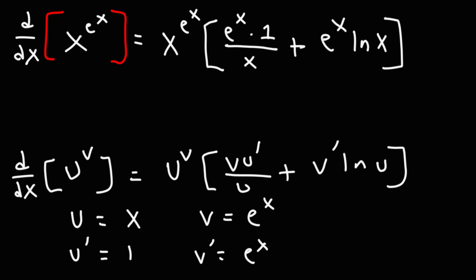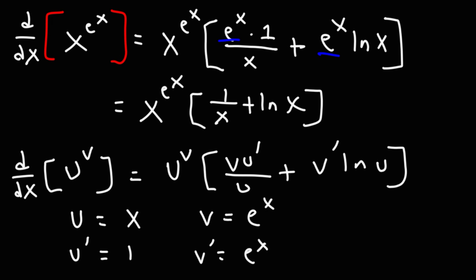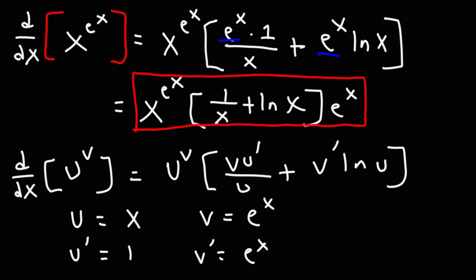So now let's see if we can simplify this. In both cases we have an e to the x, so we can factor out the GCF. So it's x to the e to the x — if we take out e to the x, we're left with 1 over x plus ln x. So the answer is x raised to the e to the x, times e to the x, times the quantity 1 over x plus ln x.